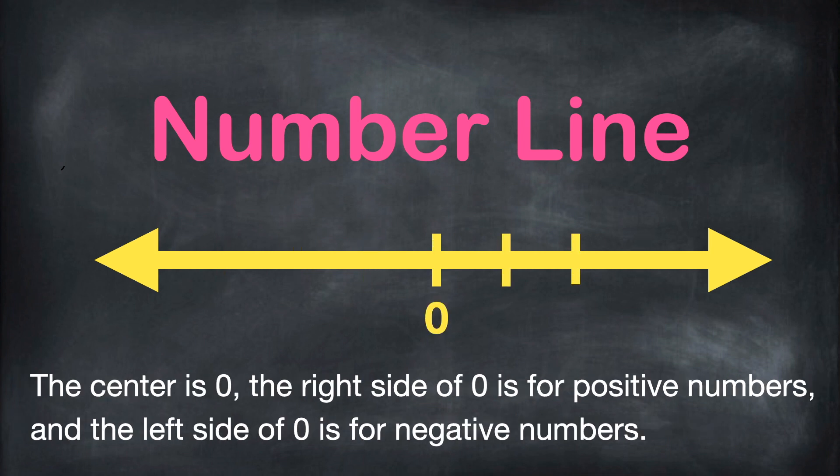The center is 0. The right side of 0 is for positive numbers, and the left side of 0 is for negative numbers.